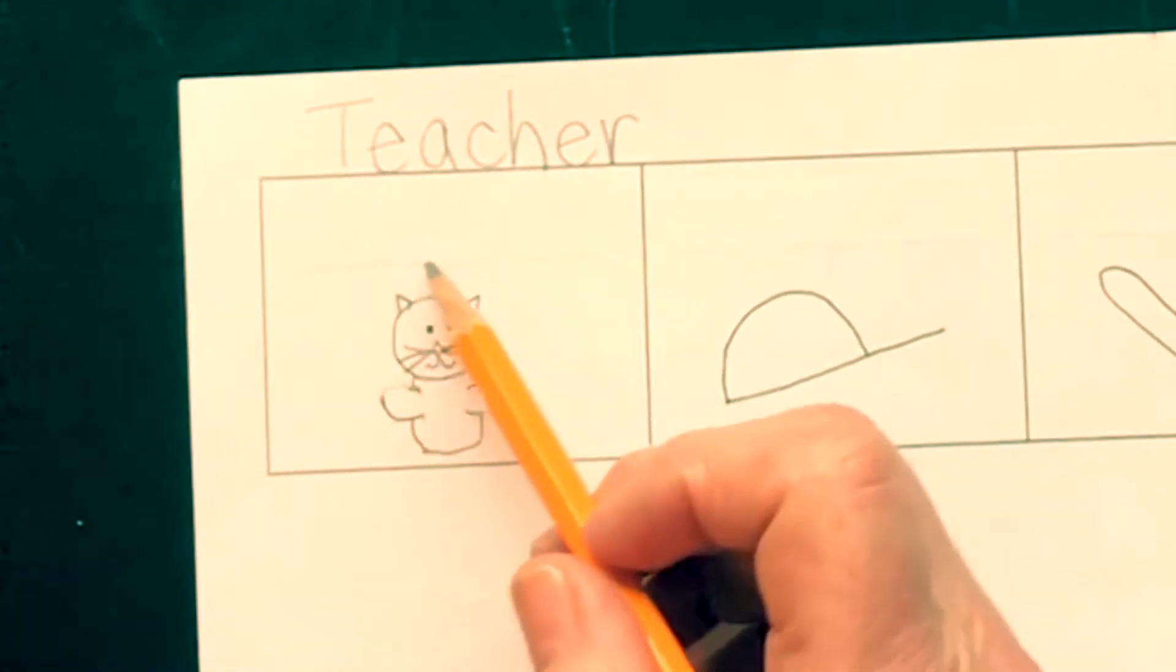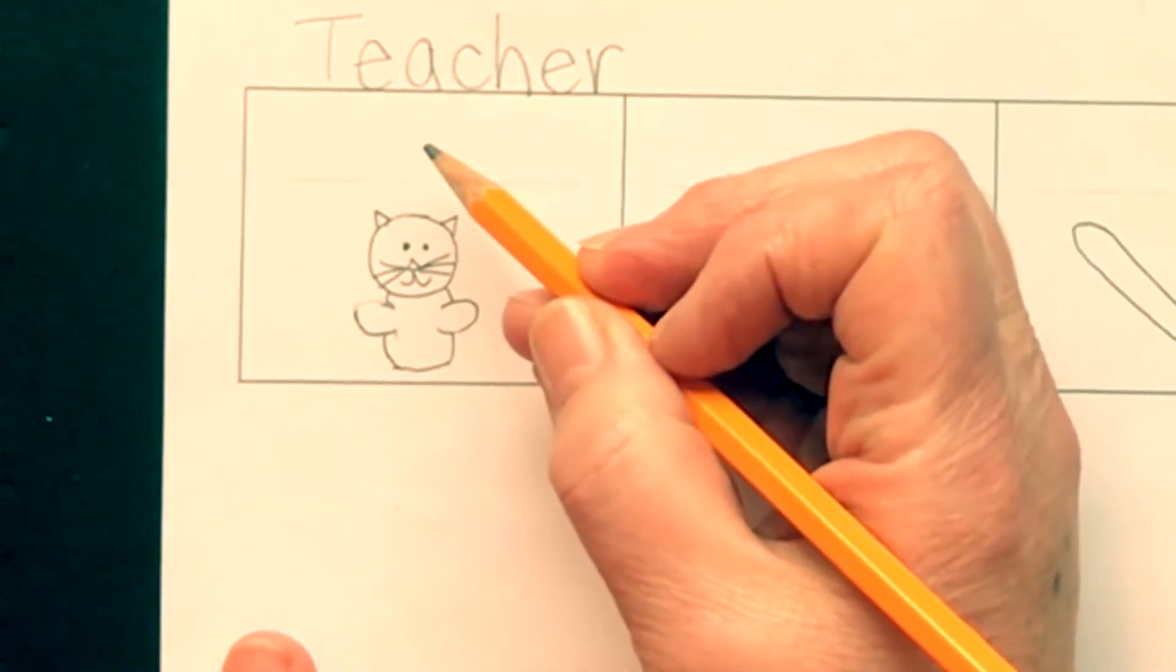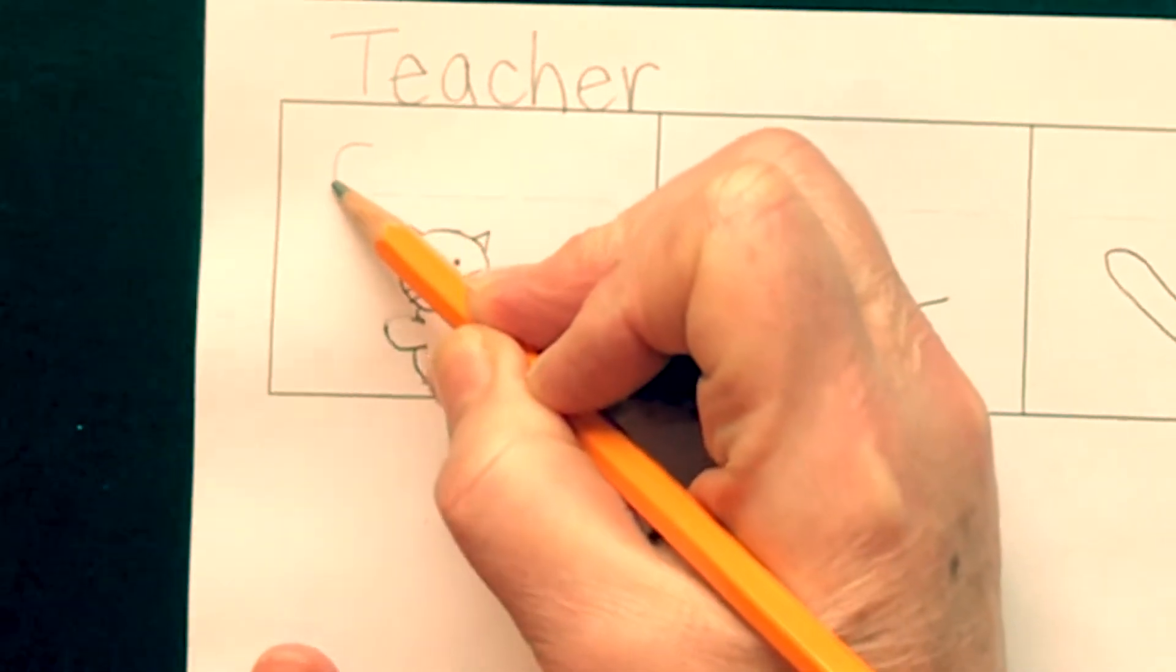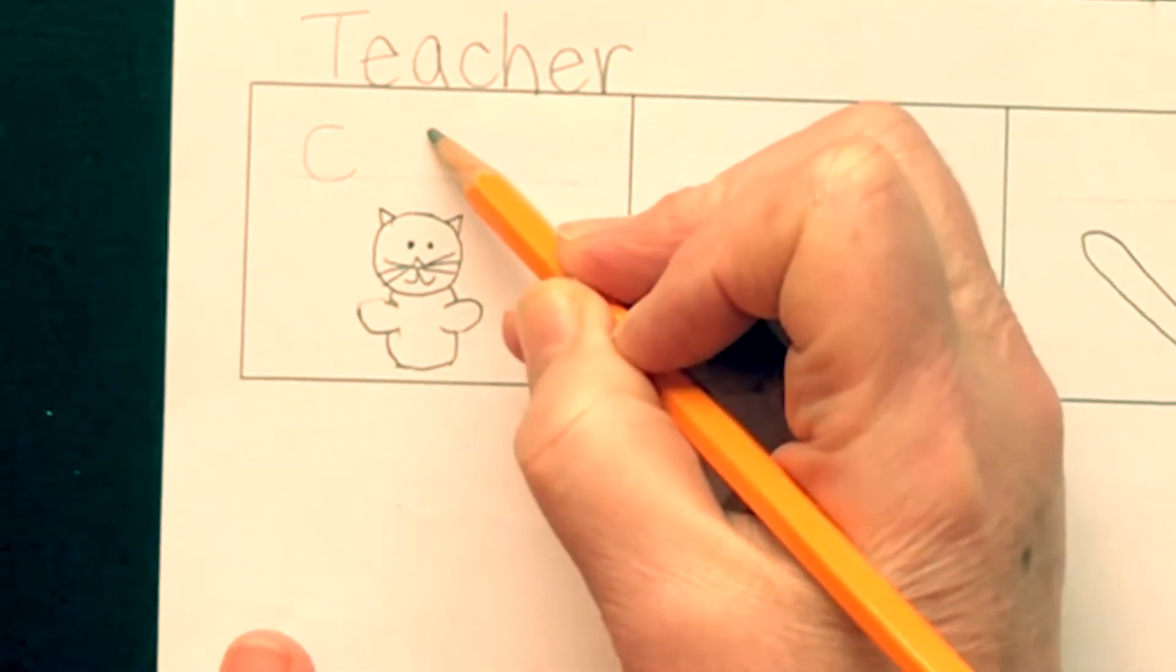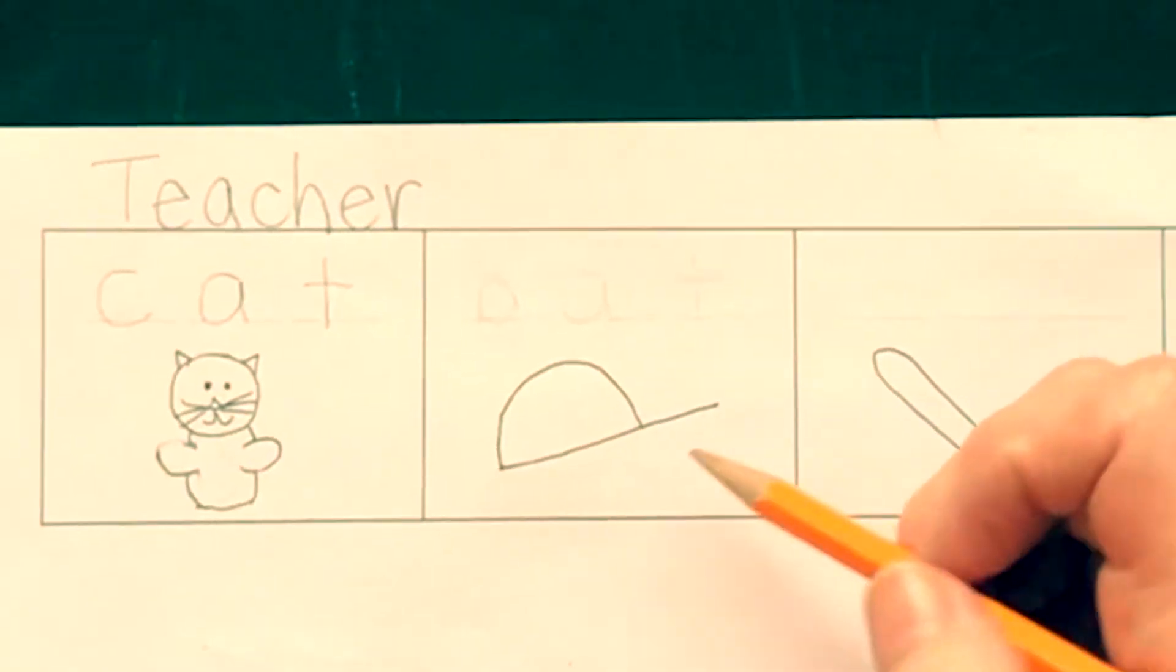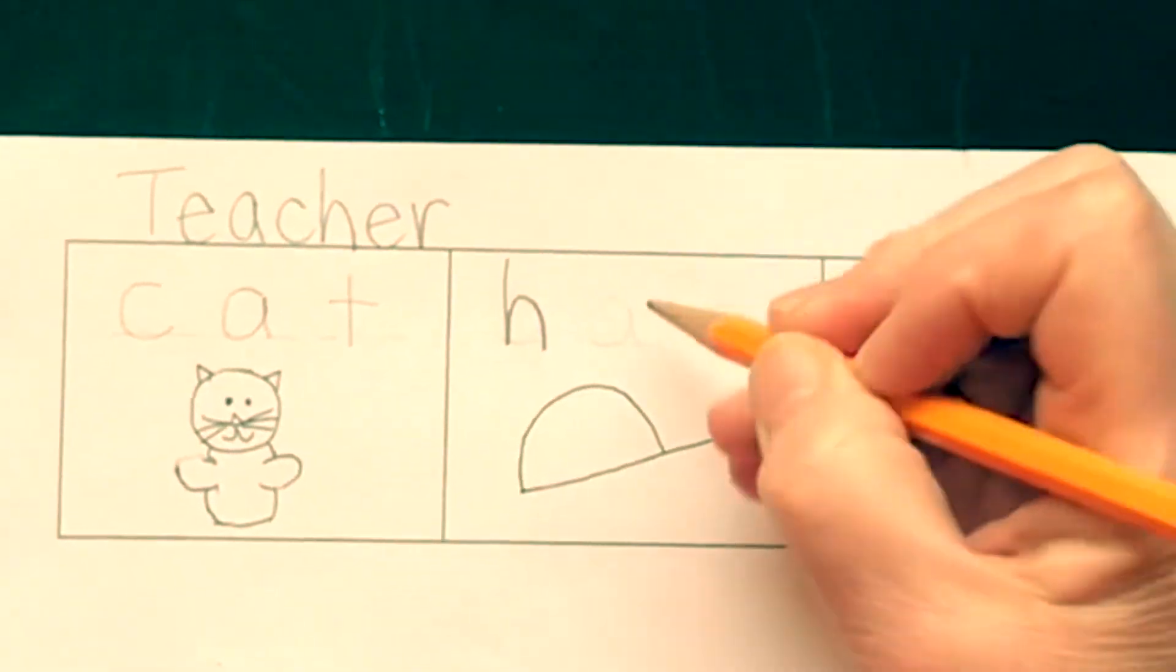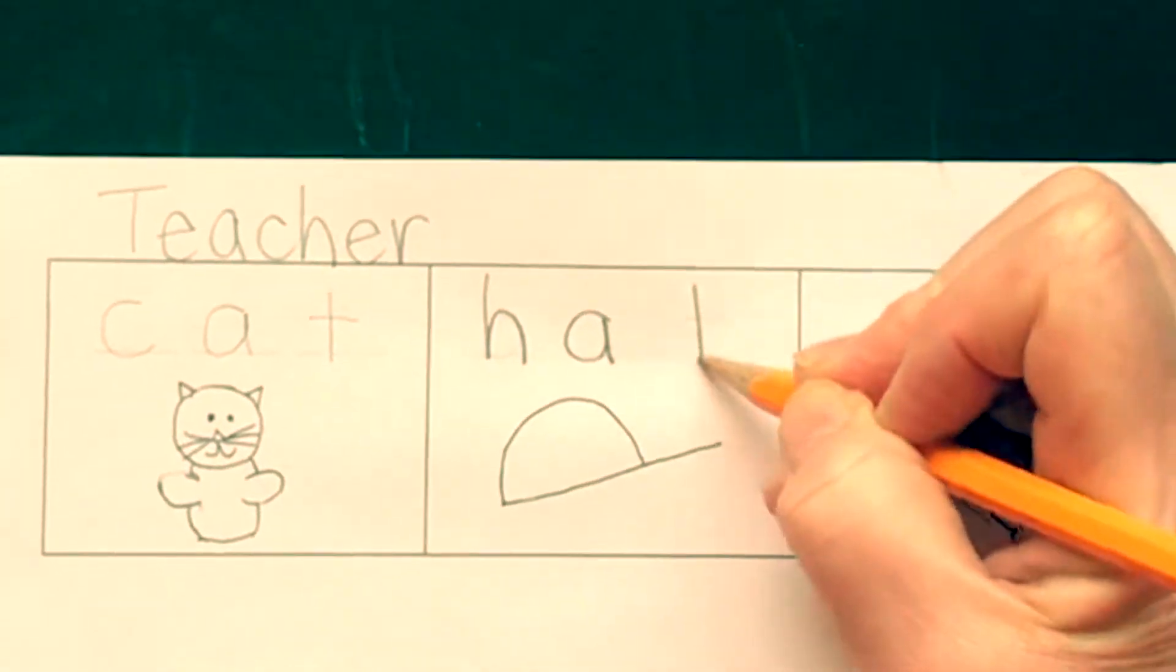And now let's say the sounds, those three sounds, and put them on the lines. Cat. What did we hear at the beginning? C-C-C. Make a C. C-A-T. Cat. Now let's sound out hat. H-H-H. Make an H. H-A-T. Hat.